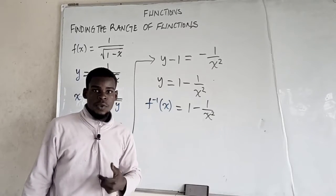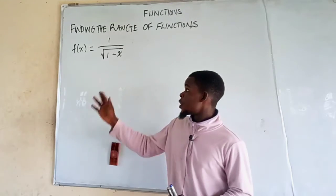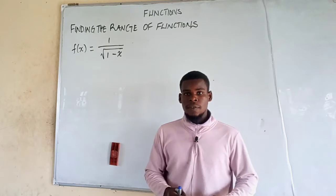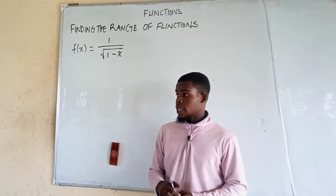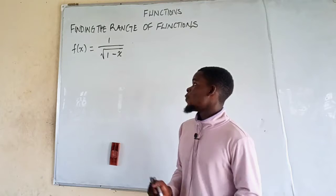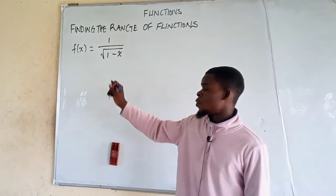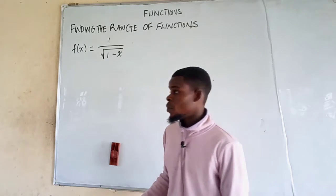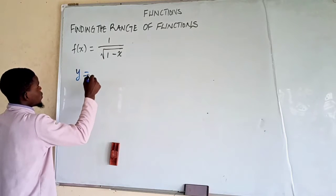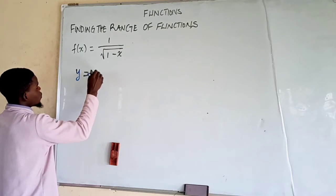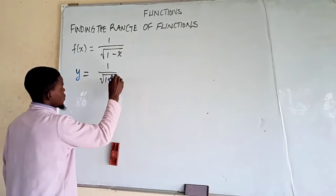To find the range of this function, we're going to find the domain of the inverse of that function. The function is f(x) = 1 over the square root of 1 minus x. So to find the range, we first have to replace f(x) with y. That gives us y equals 1 over the square root of 1 minus x.